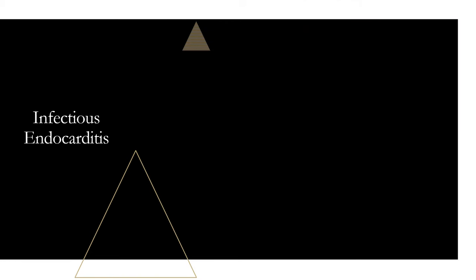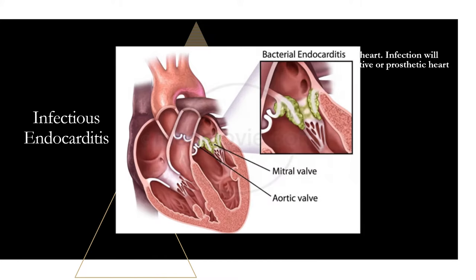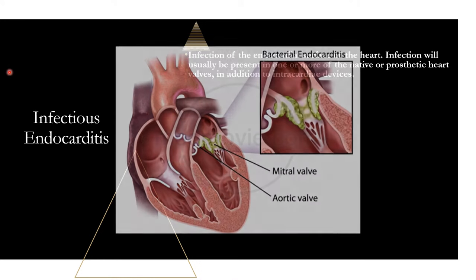So what is infectious endocarditis? This is an infection of the endocardial surface of the heart — the inner layer of tissue that lines the chambers of the heart. Usually the infection involves one or more of the native heart valves. It can also occur on prosthetic valves and intracardiac devices. You'll see these vegetations or lesions on the valves, as shown in this diagram.